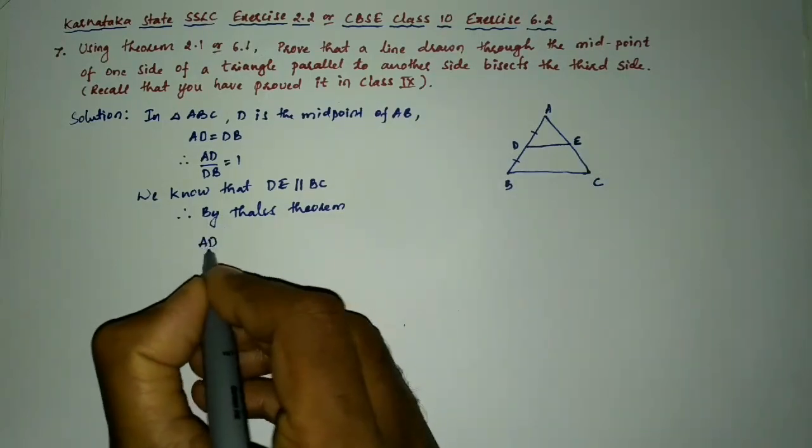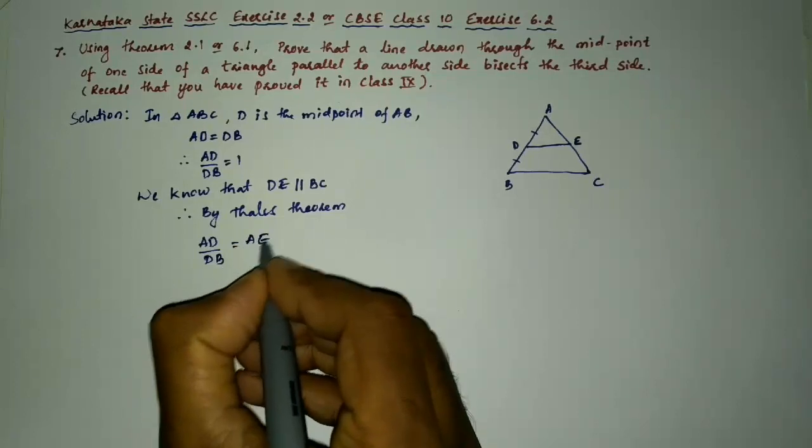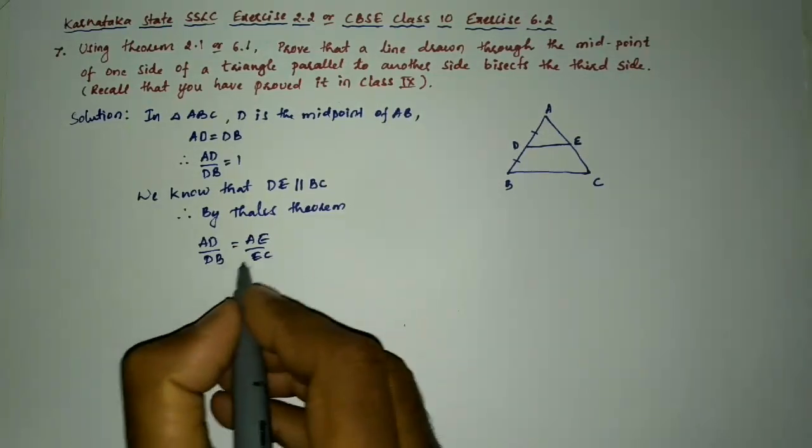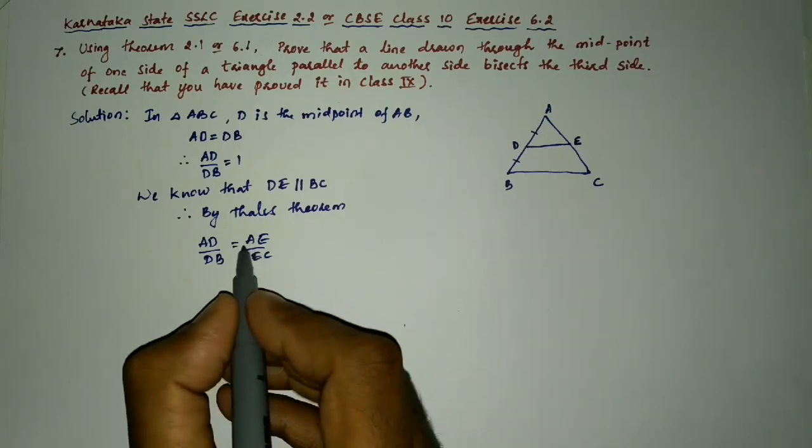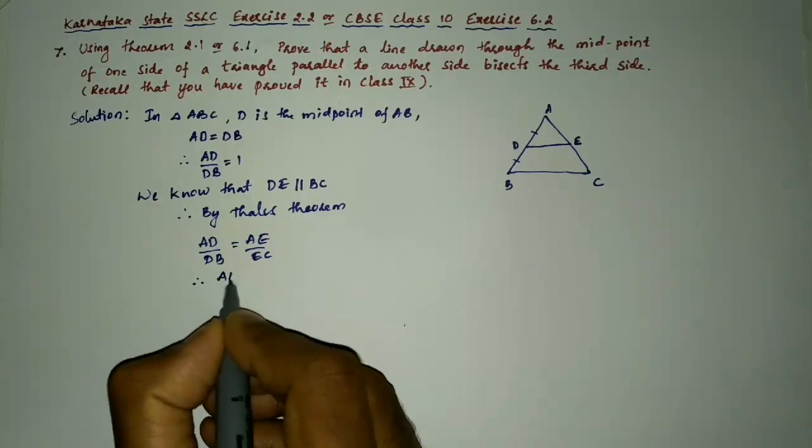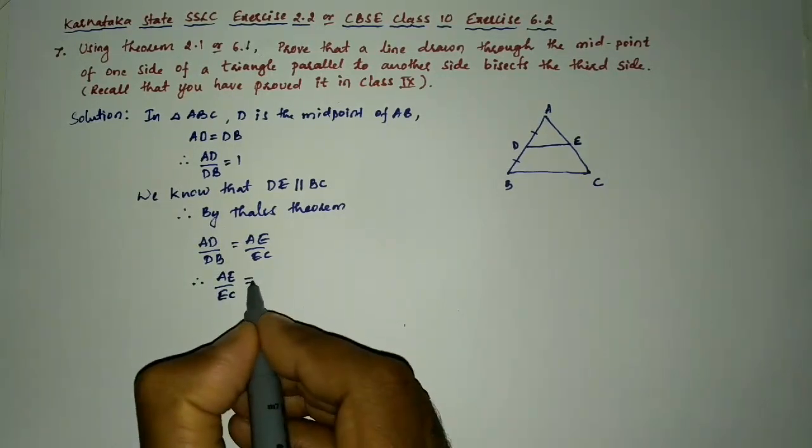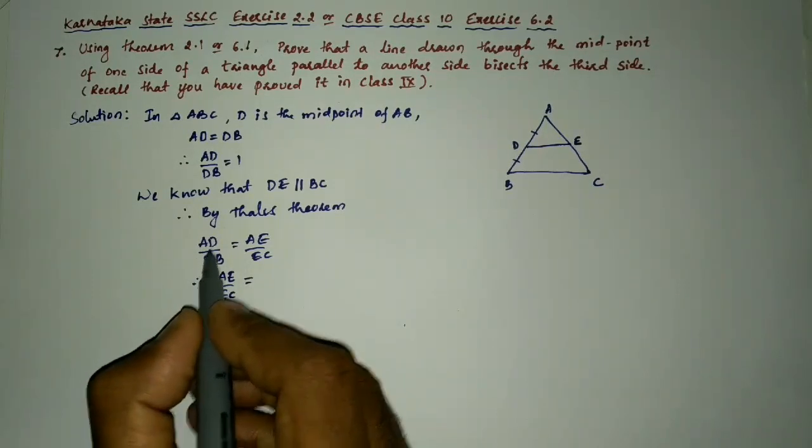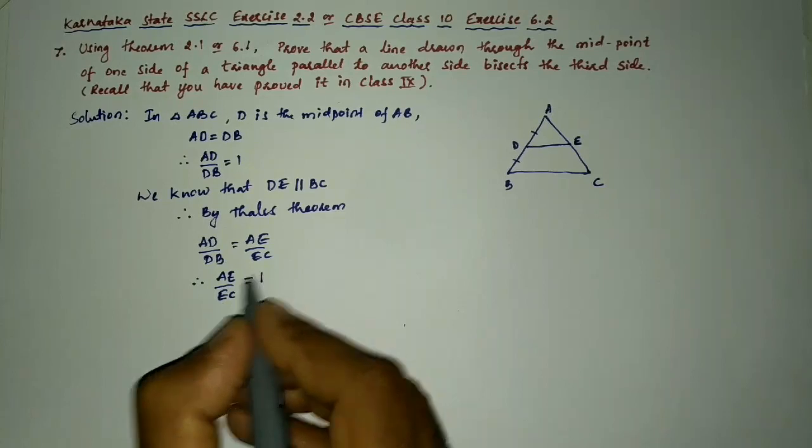Here we will write AD by DB is equal to AE by EC. When I compare and substitute AD by DB is equal to 1, then AE by EC is equal to 1.